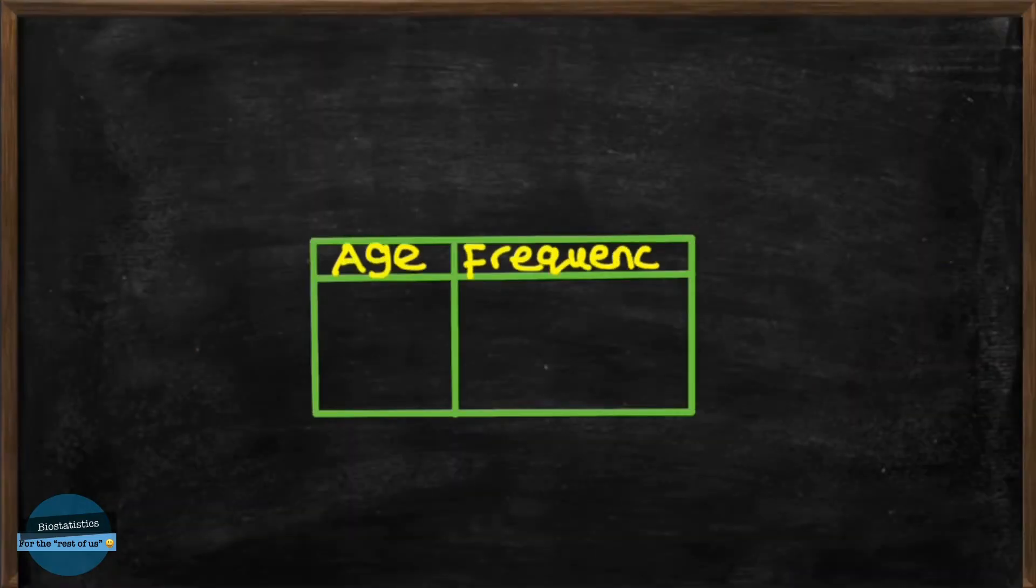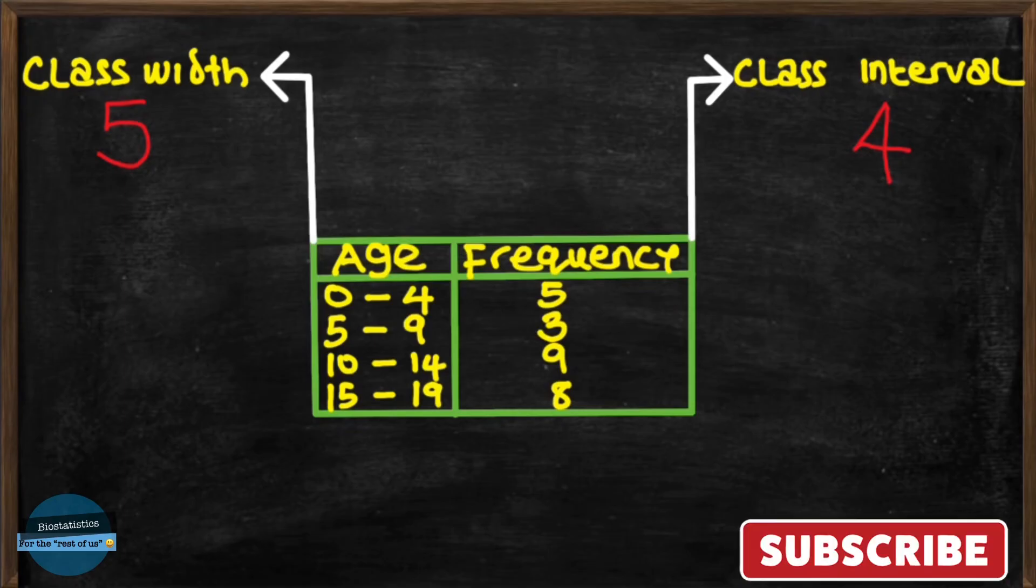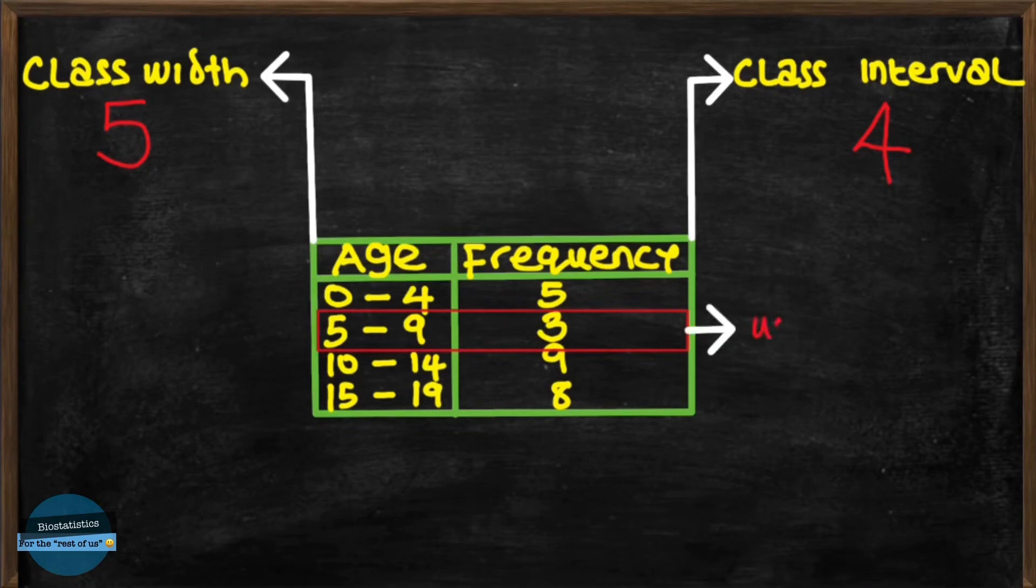So for example, the following frequency distribution has a class width of 5 and a class interval of 4. Because if we take one class, say the second class with an interval of 5 to 9 years, the class interval is the upper class limit which is 9 minus the lower class limit which is 5. So we have a class interval of 4.